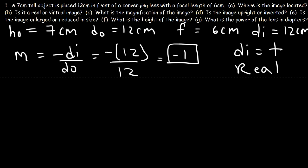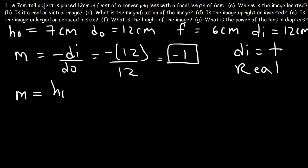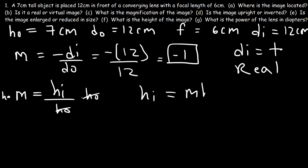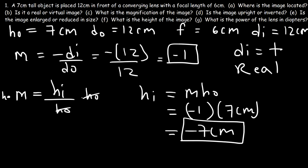To calculate the height of the image, rearrange the magnification formula by multiplying both sides by HO: the height of the image equals magnification times the height of the object. The magnification is negative 1 and the height of the object is 7 centimeters, so the height of the image is negative 7 centimeters. The object has a positive height, meaning it faces upward, while the image has a negative height, meaning it is inverted and faces downward.